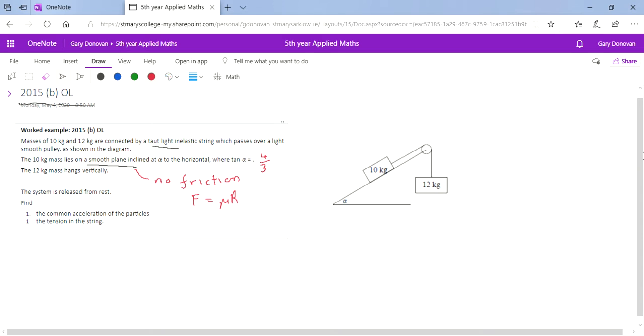If we look at the diagram, what do we expect is going to happen? We probably expect that once this is released from rest, the 12 kg particle is going to move down with an acceleration a, and because they're connected by a light inextensible string, the 10 kg particle will move up with the same acceleration a.